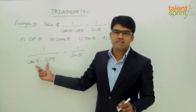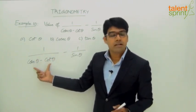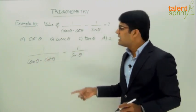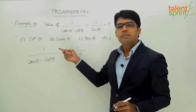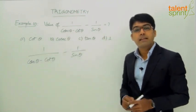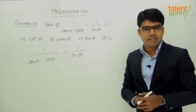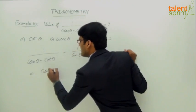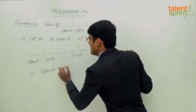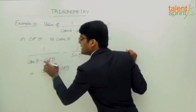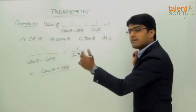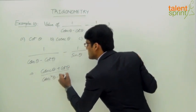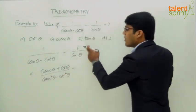Since only the denominator cannot be multiplied by cosecant theta plus cot theta, we must multiply both numerator and denominator by it. In the first term, multiplying both numerator and denominator by cosecant theta plus cot theta gives us cosecant theta plus cot theta divided by cosecant squared theta minus cot squared theta, minus 1 by sine theta.